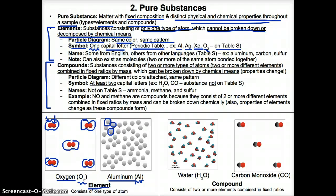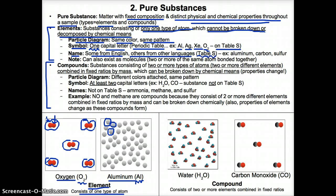In a nutshell, elements consist of only one type of atom or sometimes one type of molecule — same color, same pattern for the particle diagrams — and the symbol has only one capital letter. Since you have only one type of atom or molecule, it cannot be decomposed or broken down by chemical means because it's the simplest type of substance you can have. In terms of names of elements, some names come from English, but others come from other languages. The names of elements are listed on table S. So if you find the name of a substance on table S, it will be an element.